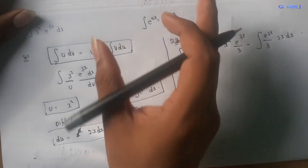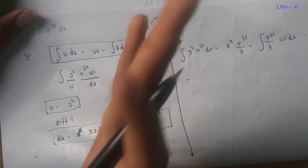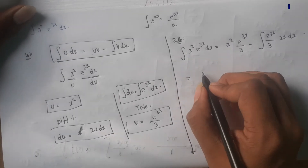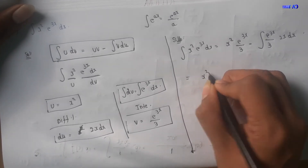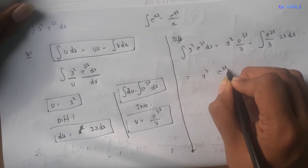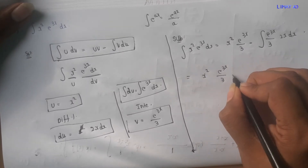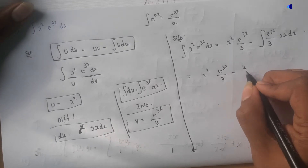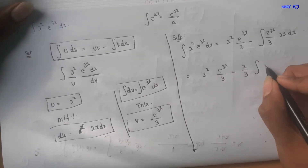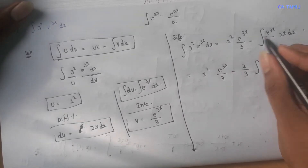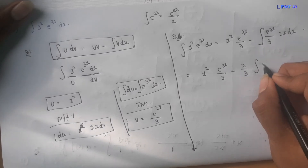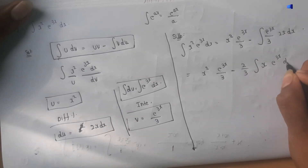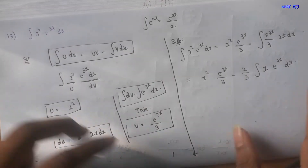Substituting into the formula gives us: x squared times e power 3x divided by 3, minus the integral of (e power 3x divided by 3) times 2x dx, which simplifies to x squared e power 3x divided by 3 minus 2 by 3 times integral of x e power 3x dx.